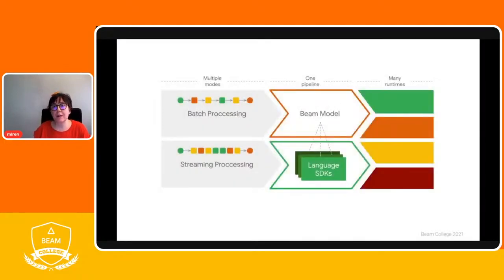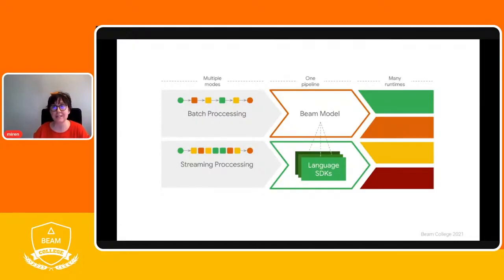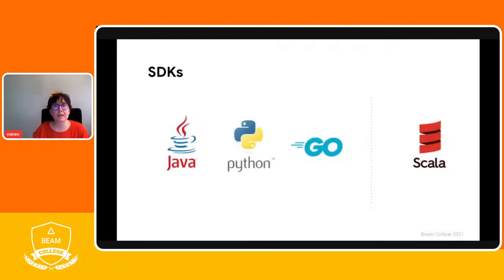The beauty of Apache BIM is that we can write a program using the available language SDKs and the same code can be used regardless of whether the data source we are consuming is a streaming one or not. The code we create is also portable — we will be able to run it on a variety of supported runners, provided that they have implemented the capabilities required by our code. Currently BIM has SDKs in Java, Python, and Go.